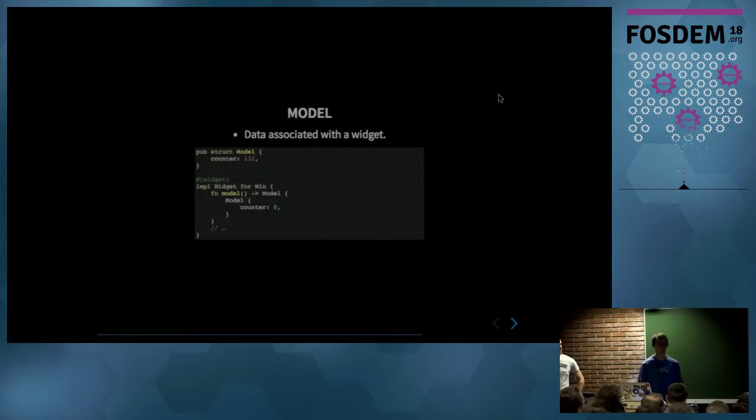So let's see how we can use Realm. First, we need to declare a model, which is a normal type in Rust. So it could be a struct. And then we use this widget attribute on an impl of widget, which is the trait we want to implement. And for a window in this case, which will create a window. So we need first the model method, which declared the initial model of your widget.